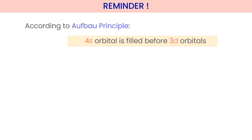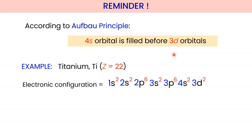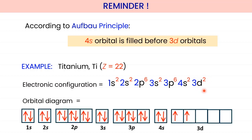A reminder: when writing electronic configurations involving the 3d orbital, the 4s orbital should be filled before 3d orbitals. For example, titanium with Z=22 has 22 electrons. The SPDF notation is: 1s², 2s², 2p⁶, 3s², 3p⁶, 4s², then only 3d². This is because according to Aufbau, 4s has lower energy than 3d. So please ensure you include 4s² before filling in 3d.